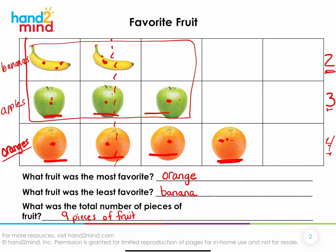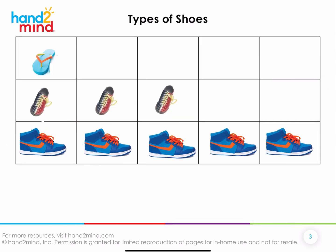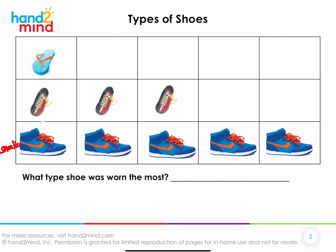Let's look at another graph you saw yesterday — a graph called types of shoes, where we took off our shoes and sorted them into different types. We're going to call these our sneakers, these are our bowling shoes, and these are our flip flops.